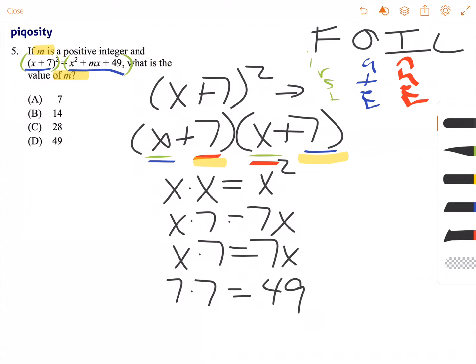Now once we've multiplied all those together, then we add them all up. So x² + 7x + 7x + 49. Now we can't do anything else with the x² or the 49, but we can simplify these two values or add them together to get 14x.